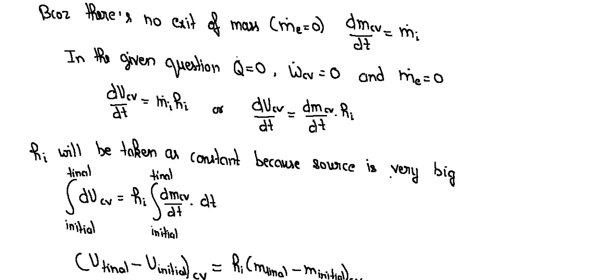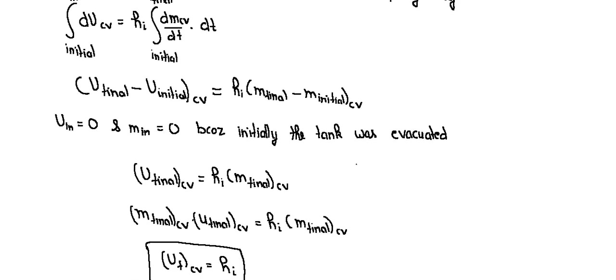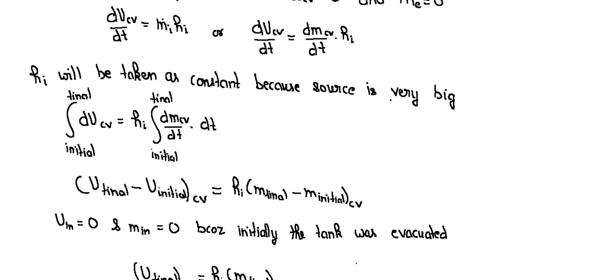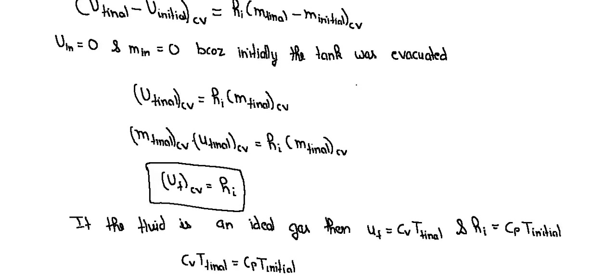Now we will apply U final minus U initial for control volume. Because initially tank was evacuated, m inlet and U inlet both are zero. U final for control volume should be equal to hi into m final for control volume.